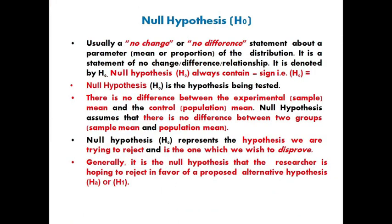Null hypothesis is usually a no-change or no-difference hypothesis. It is a statement about a parameter — mean or proportion of the distribution. It is a statement of no-change, difference, or relationship. It is denoted by H0. Null hypothesis always contains an equal-to sign, and it states that there is no difference between two means or a parameter mean or proportion of the distribution.